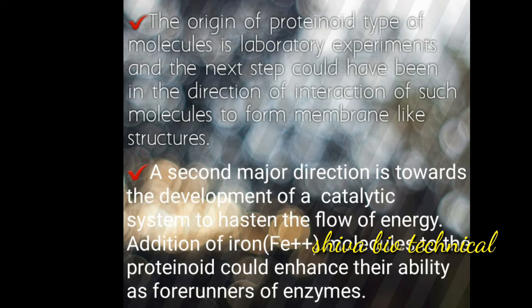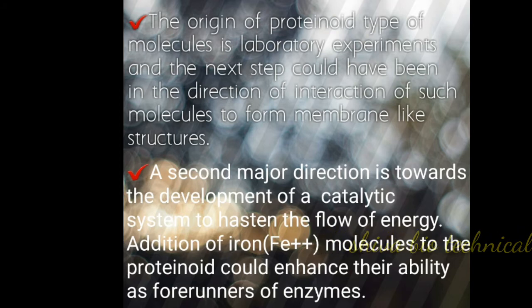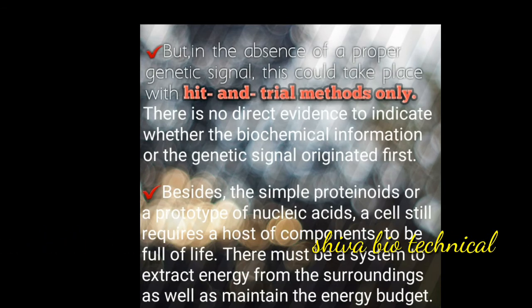To strengthen the flow of energy, addition of iron molecules to the protenoids could enhance their ability as formation of the enzyme. This is the catalytic system — it is like enzymatic ability. When iron molecules attach to the protenoids and enhance the ability of enzymes, but in the absence of a proper genetic signal, this could take place by hit-and-trial methods only. There is no direct evidence to indicate whether biochemical information or the genetic signal originated first. When genetic signal is absent in the prebiotic period, hit-and-trial methods only apply.